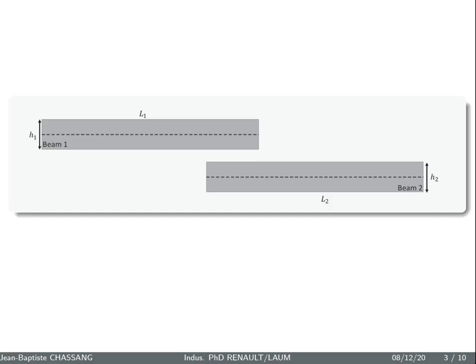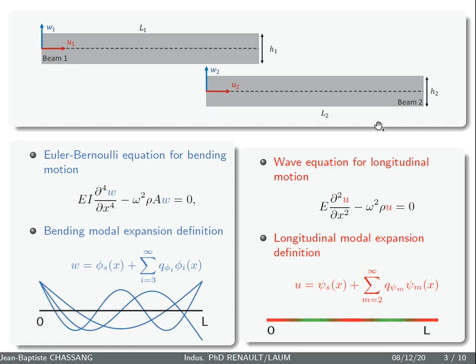In order to understand more simply the mechanism of motion conversion, we limit ourselves to the study of beams with different characteristics. We are interested in compression and bending movements while torsion is neglected.